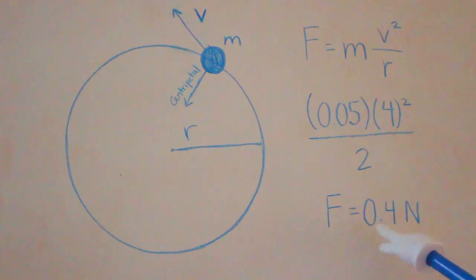You can also see that it would take more force to make the ball spin faster or in a tighter circle, due to the object's inertia.